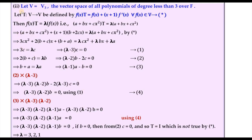For the next example, consider the vector space V of all polynomials of degree less than 3 — that is, a + bx + cx², where a, b, c are scalars from F. We define T from V to V by the image of any polynomial f(x) under T as f(x) + (x+1)·f'(x). We want to find the characteristic roots and then the characteristic vectors, using the criterion vT = λv for lambda to be a characteristic root.